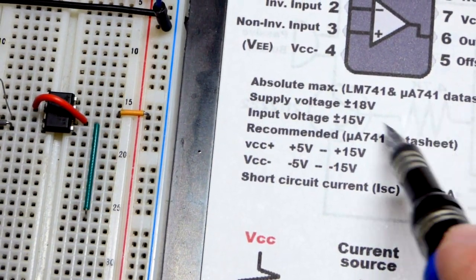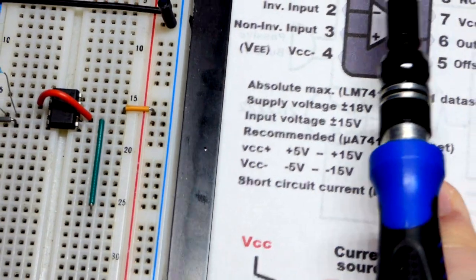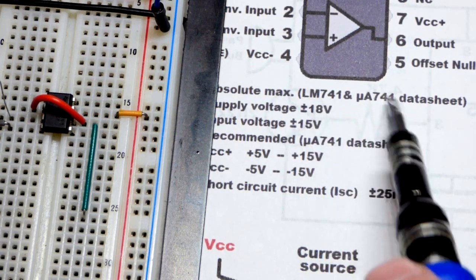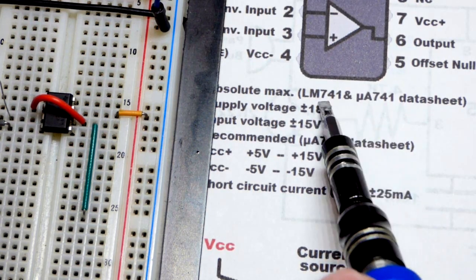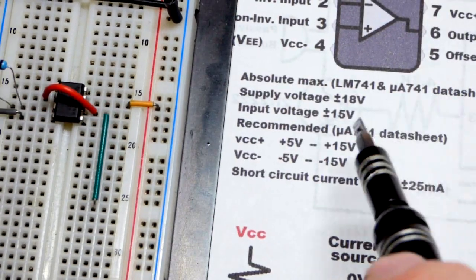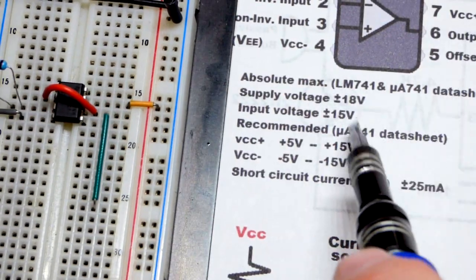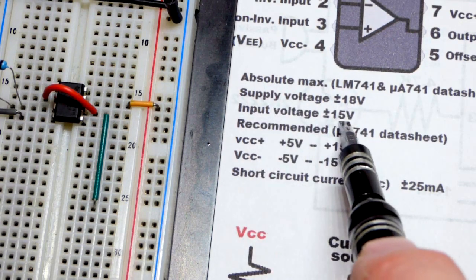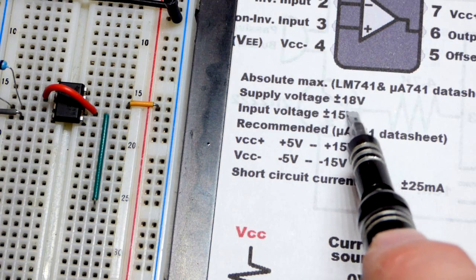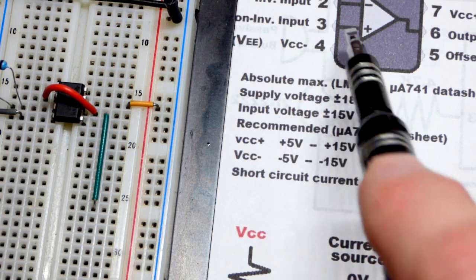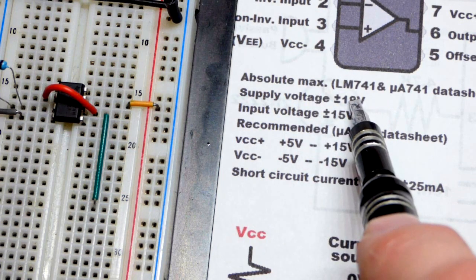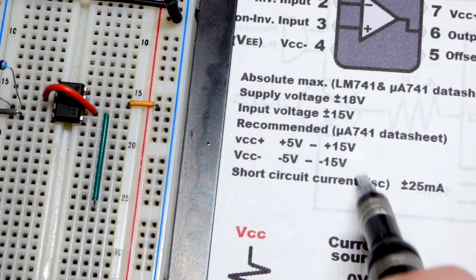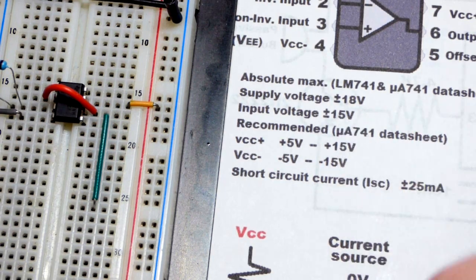The ultimate maximum for both of the data sheets I saw, I looked at one for the LM741 and one for the UA741, which it looks like you can just swap them out. It looks like they have the same value so far. I think it's just different manufacturers, but they made it exactly the same. Supply voltage, that's absolute maximum. Input voltage for the pins, that's absolute maximum. It's lower for the input voltage than the maximum power supply voltage.